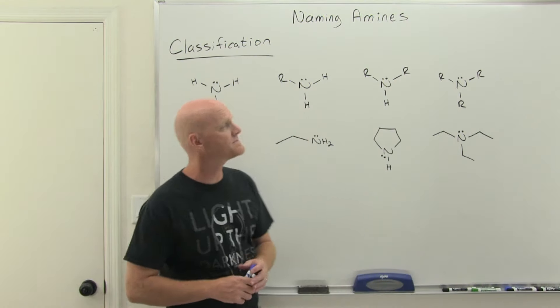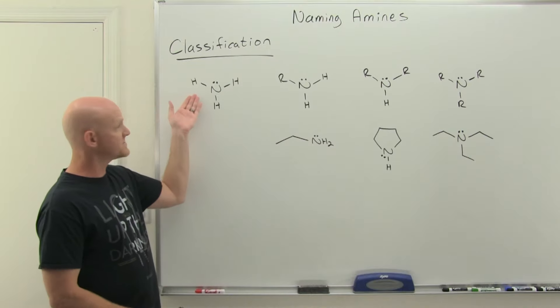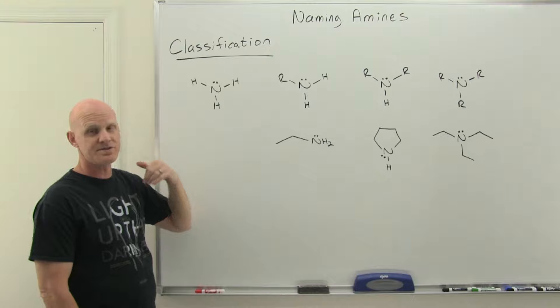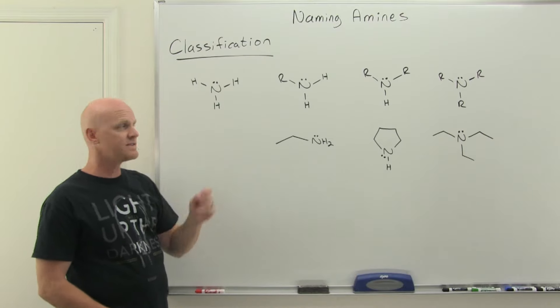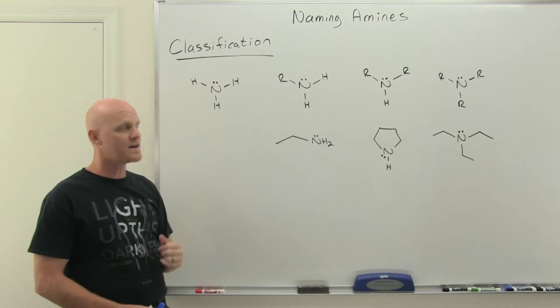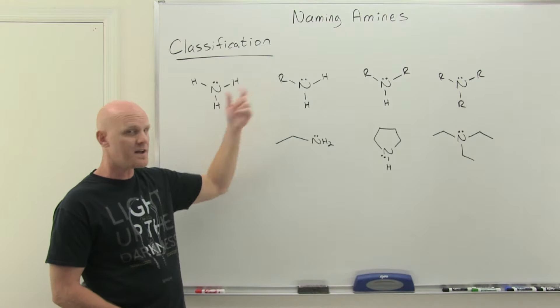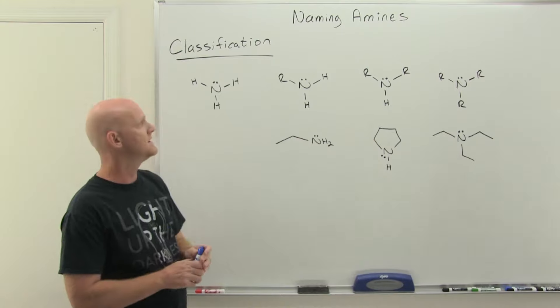We're going to start with classifying amines here. Take a look first at ammonia, back from Gen Chem. Nitrogen just bonded to three hydrogens, and nitrogen having five valence electrons typically is going to have three bonds to get that filled octet. As you start sequentially replacing these hydrogens with carbon chains - methyl, ethyl, propyl, whatever - we say they get more substituted.